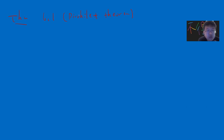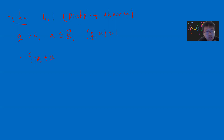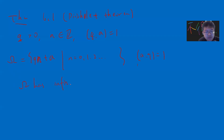The idea is: given q, a positive integer, and a, another integer such that q and a are coprime, consider the set {qn + a} for n = 0, 1, 2, ... Dirichlet's theorem says that this set omega contains infinitely many prime numbers.